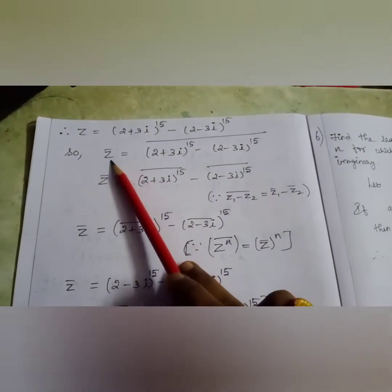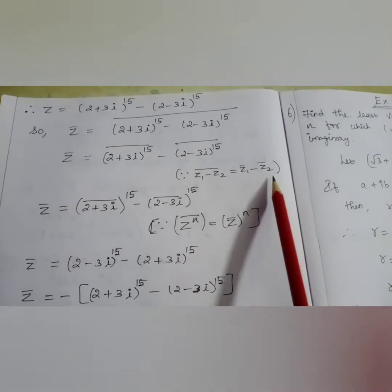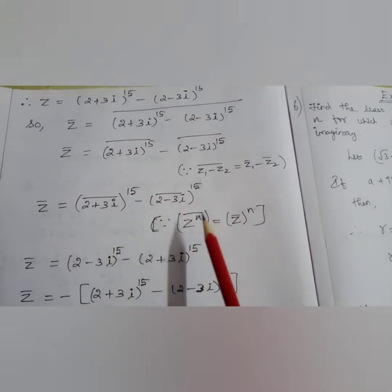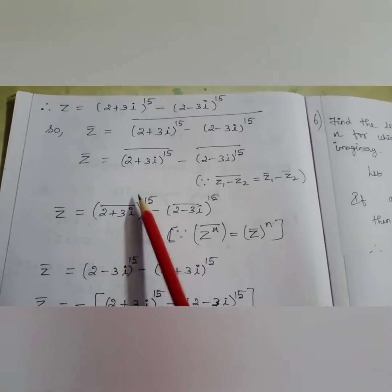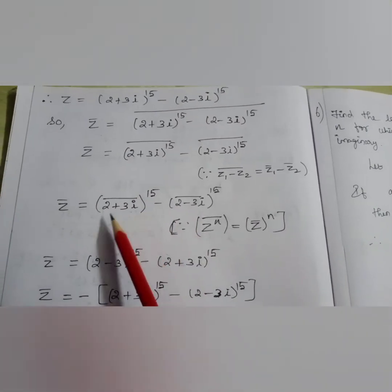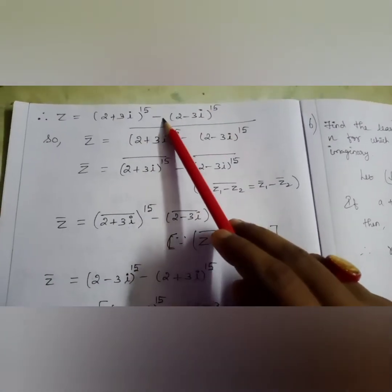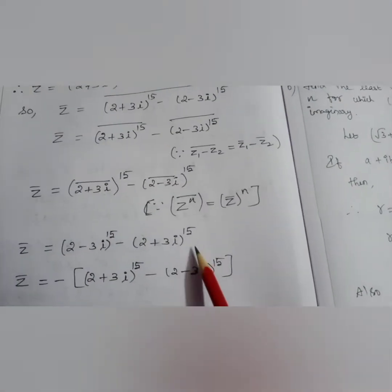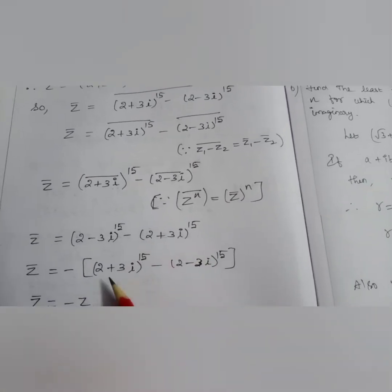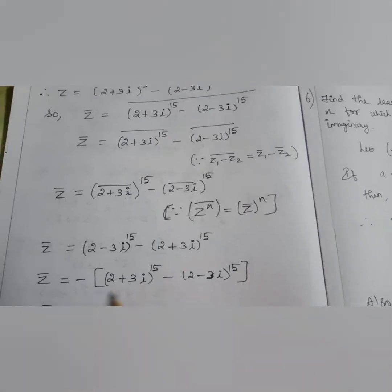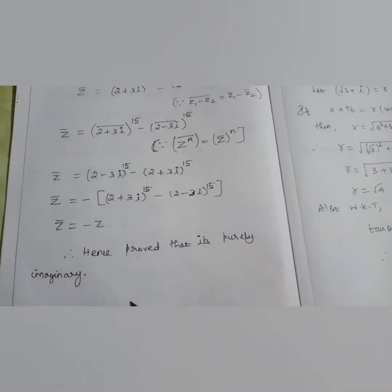Now convert z̄. Applying the bar and using the property (z₁ − z₂) bar = z₁ bar − z₂ bar, we split the bar. Then using z^n bar = z̄^n, we interchange. So we write the conjugate: (2 + 3i) becomes (2 − 3i) and (2 − 3i) becomes (2 + 3i). Comparing z̄ and z: taking the minus outside gives (2 + 3i)^15 − (2 − 3i)^15, which is nothing but z. So z̄ = −z, and hence proved that it is purely imaginary.